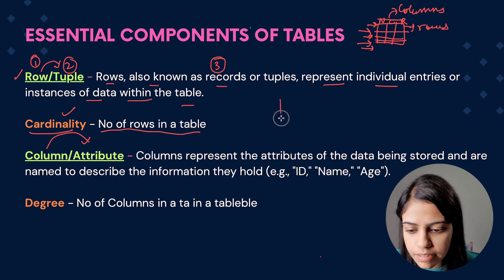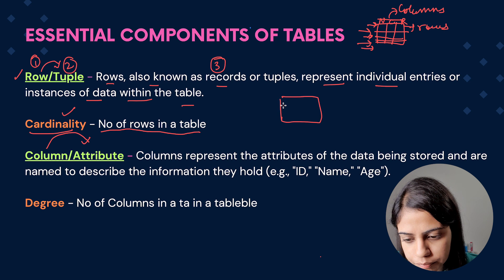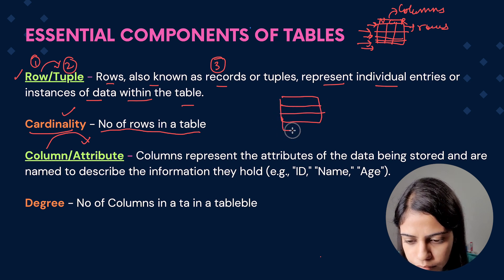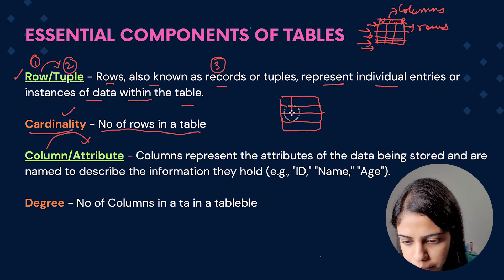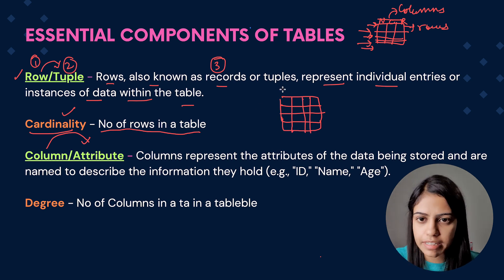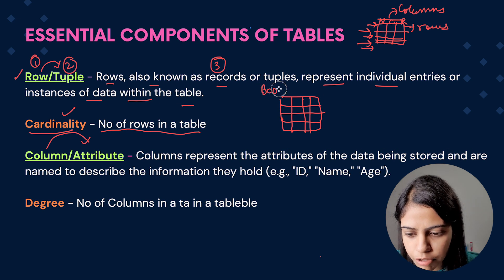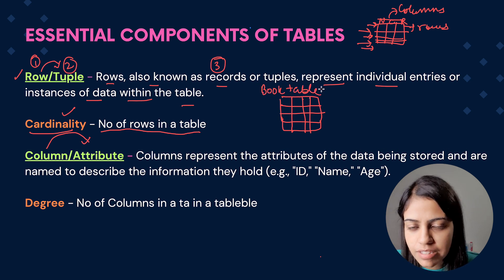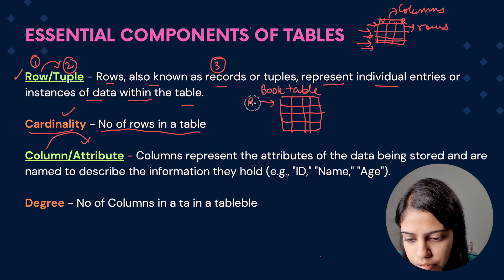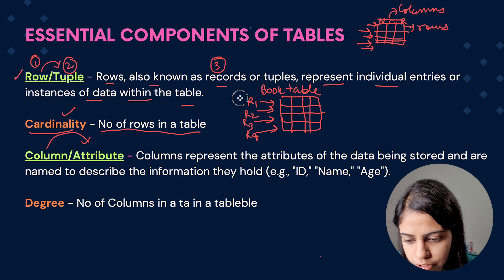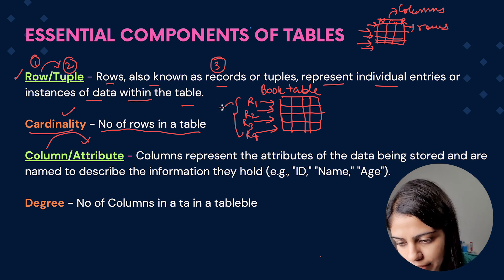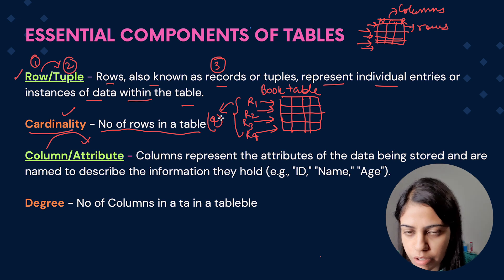Consider this is my table — a book table. Someone asks me: what is the cardinality of this table? What I will do is count the number of rows. This is R1, this is R2, this is R3, and this is R4. So altogether the cardinality becomes 4. Cardinality is basically the number of rows in the table.